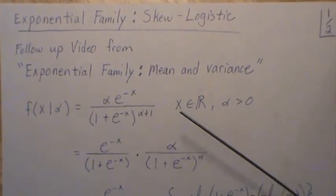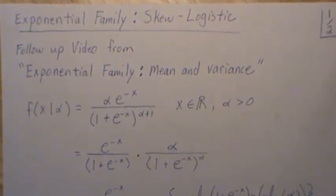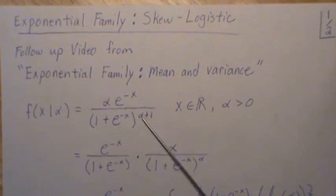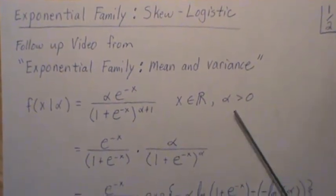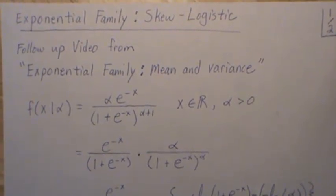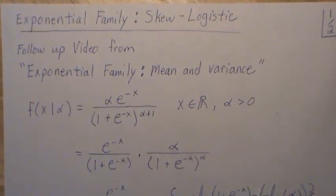Now we're going to do it specifically for the Skew Logistic Distribution. So the density is written like this, where X is real and the parameter is positive. And now we want to sort of separate it or make it look like an exponential family, part of that family.